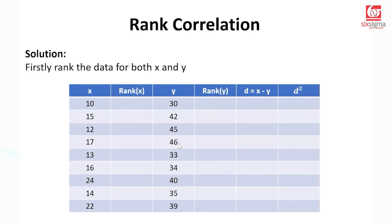Likewise, in case of y variable, the highest value that we have is 46, that gets a rank 1. And the smallest value that we have is 30, that gets a rank 9. Let's quickly populate these values, and then get the same stuff done for the variable y.